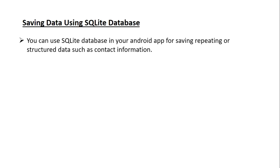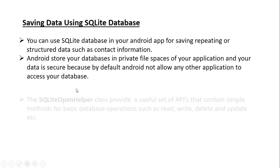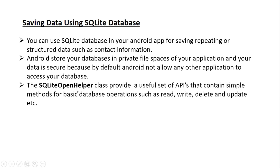You can use SQLite database in your Android app for saving repeating or structured data such as contact information. Android stores your database in private file spaces of your application, and your data is secure because by default Android does not allow any other application to access your database. The SQLiteOpenHelper class provides a useful set of APIs containing simple methods for basic database operations such as read, write, delete, and update.